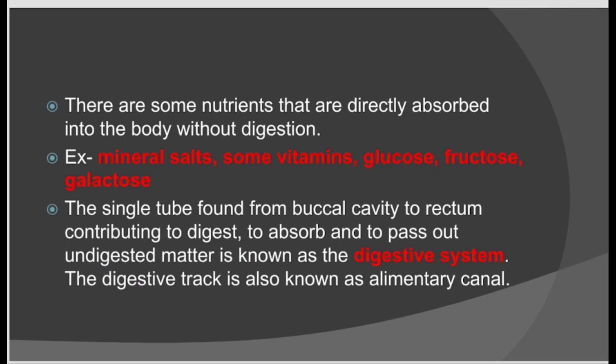We eat different types of food rich with various nutrients. Nutrients like some vitamins, minerals, salts, and simple sugars are absorbed into the blood without any digestion. But most of the nutrients get absorbed after digestion.